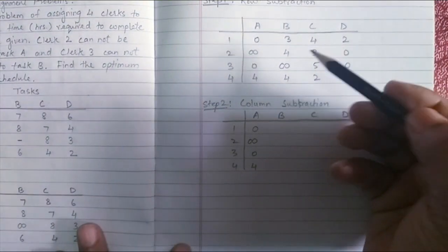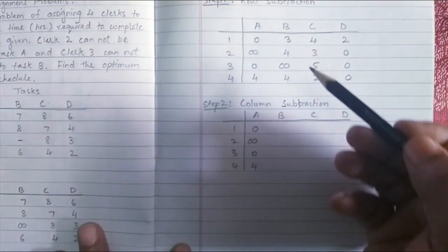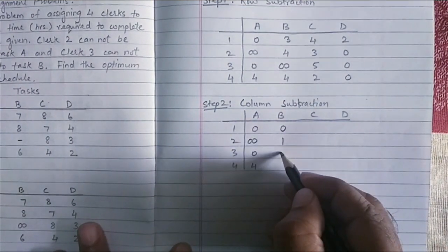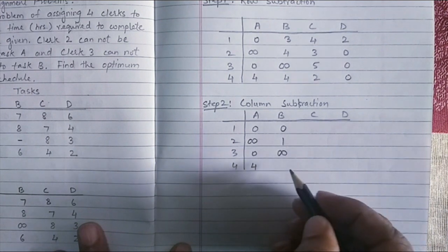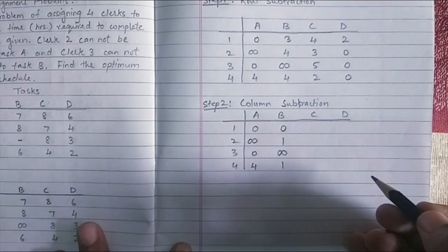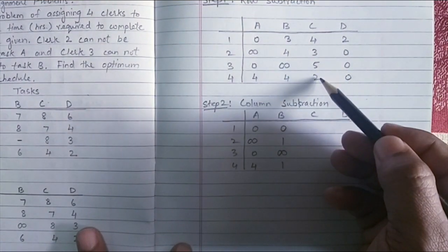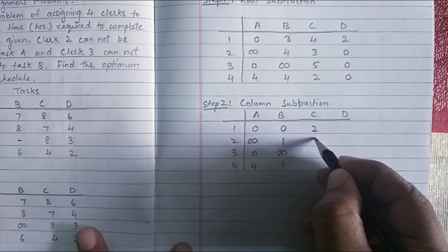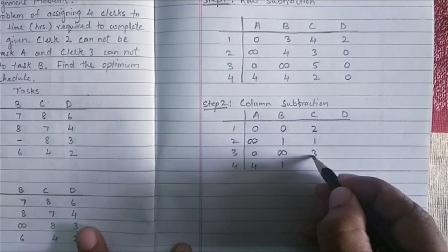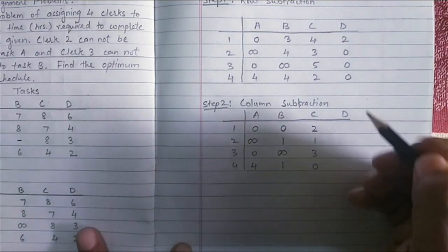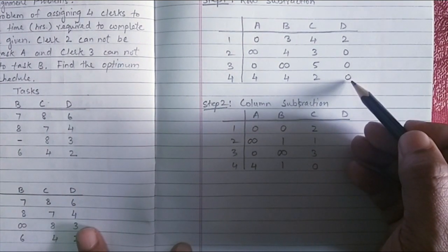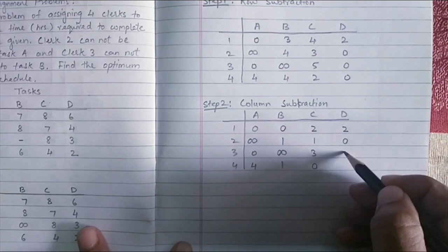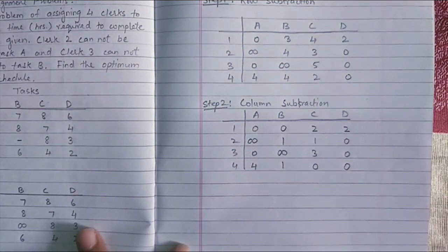In the second column, the minimum value is three. So three minus three will give me zero. Four minus three will give me one. No change for infinity. And four minus three will give me one again. In the next column, two is the minimum. Let's do the subtraction four minus two gives me two, one, three, zero. And because the minimum value in the last column is zero, there won't be any change even if we do the subtraction. So my column remains unchanged.